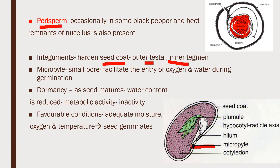Seeds undergo a special phenomenon called dormancy. As the seed matures, the water content is reduced and metabolic activity becomes almost zero. This condition is known as dormancy or sleeping condition. When favorable conditions appear again — adequate temperature, moisture, and oxygen — the seed germinates to form a new plant.